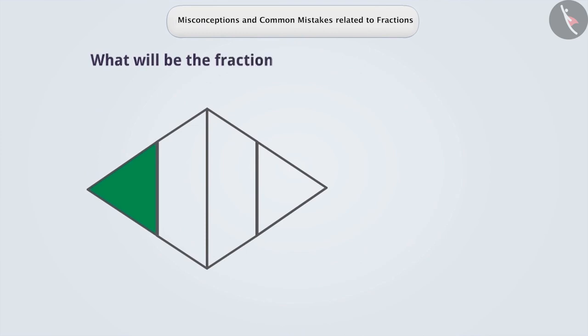If you are asked to find the fraction representing the shaded part in this figure, the total number of parts is written as the denominator and the number of shaded parts is represented as numerator. Thus, it results in an incorrect answer 1/4.